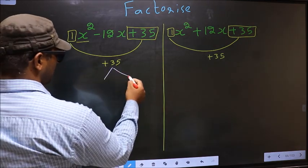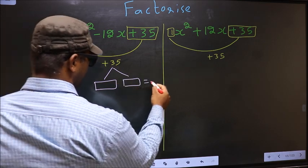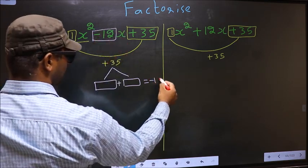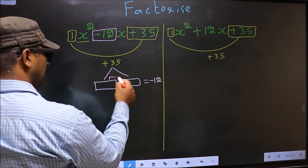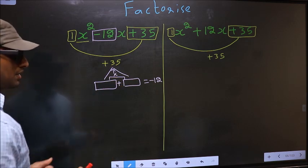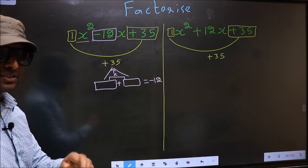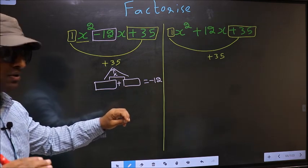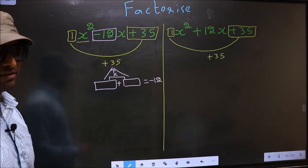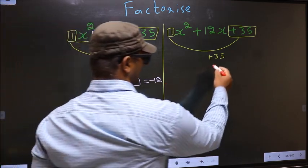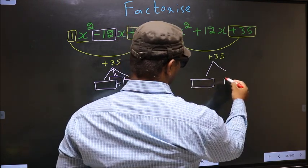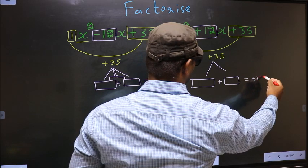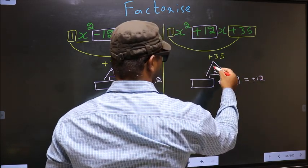Now you should look out for two numbers such that when you add these two numbers you should get the middle coefficient, that is minus 12, and also when multiplied you should get plus 35. Here also the same: look out for two numbers such that when you add them you should get the middle coefficient, that is plus 12, and also when multiplied you should get plus 35.